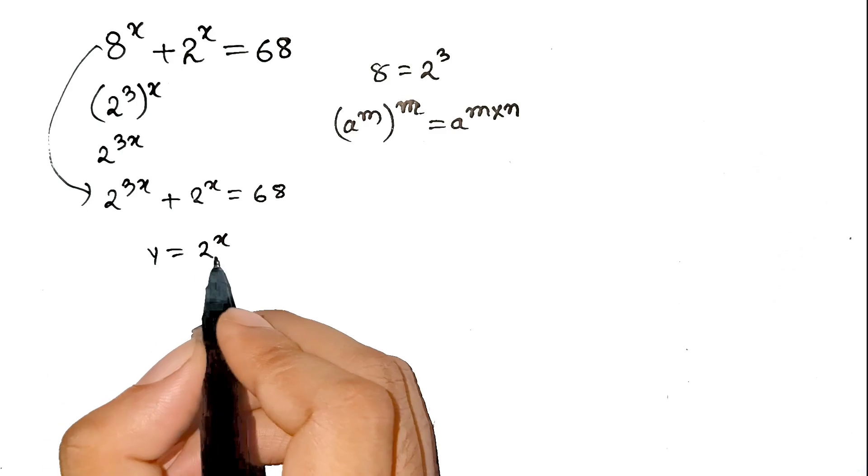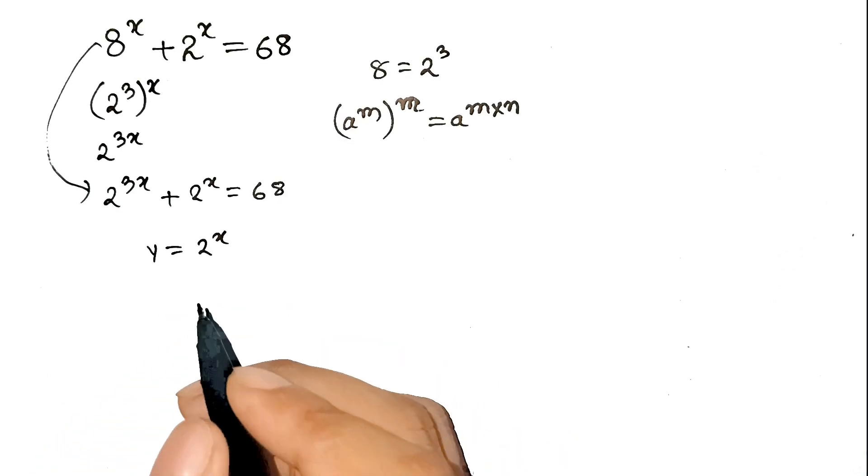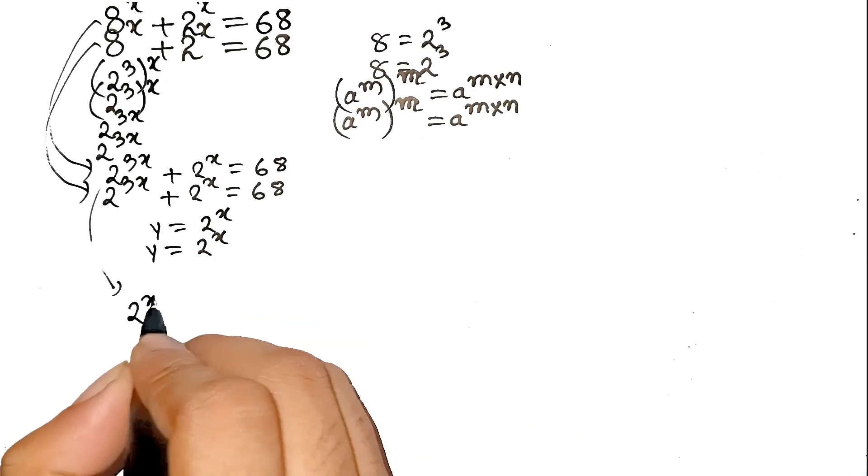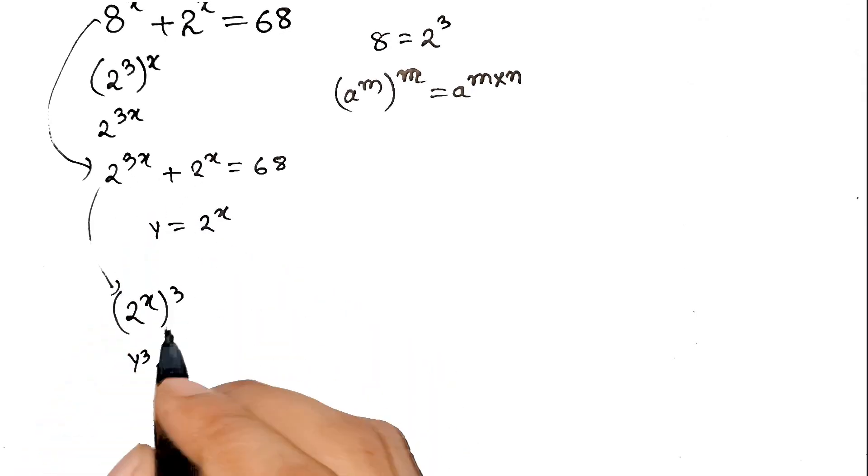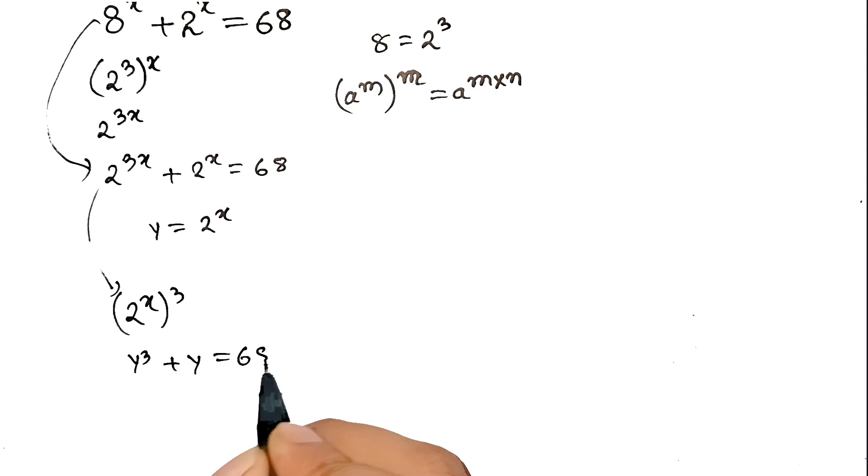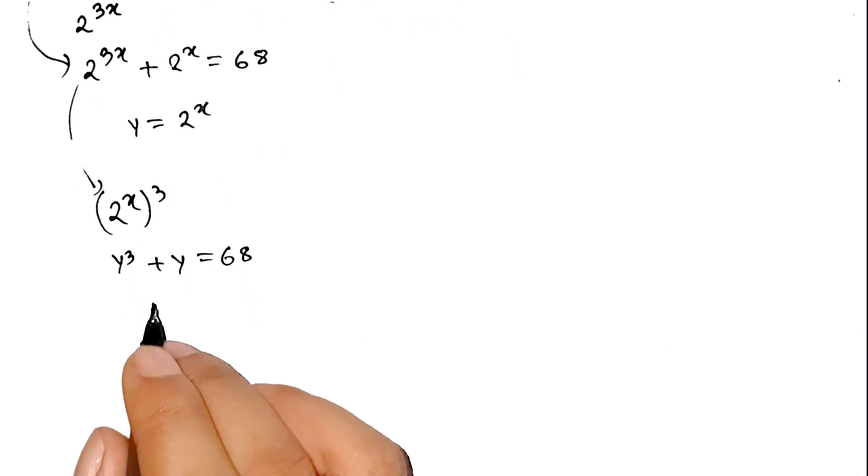If y = 2^x, then 2^(3x) becomes (2^x)^3, which is y^3. So the equation turns into y^3 + y = 68. Aha! Cleaner than my desk after mom yells at me.